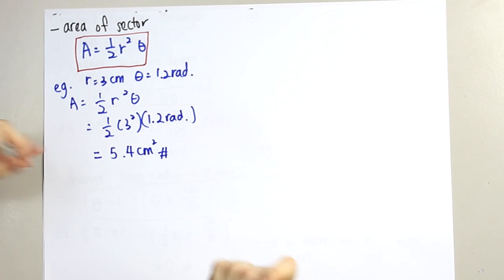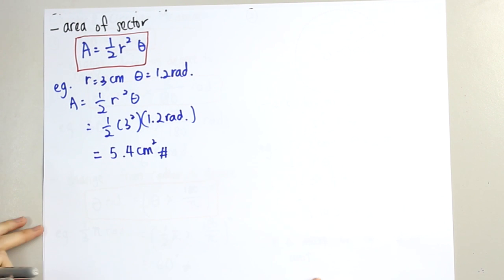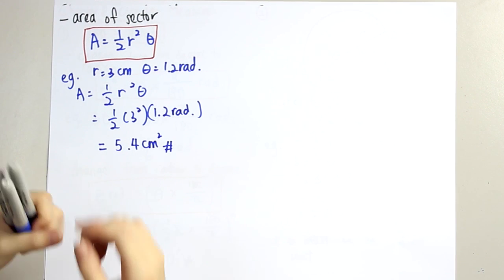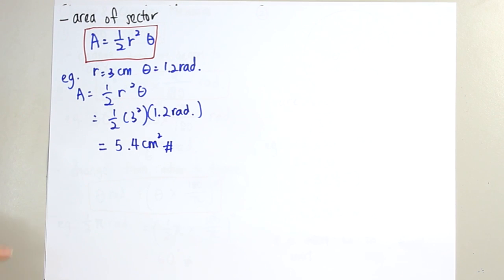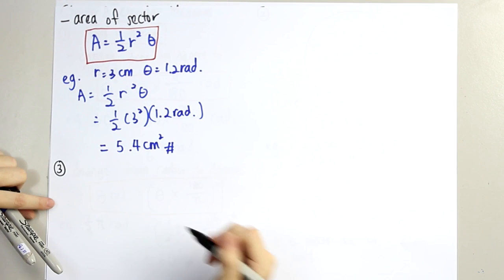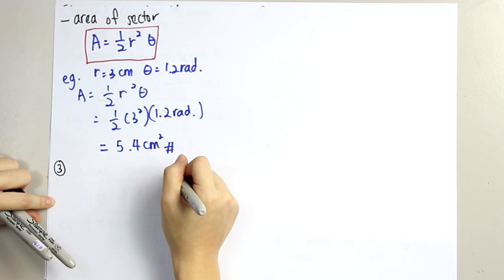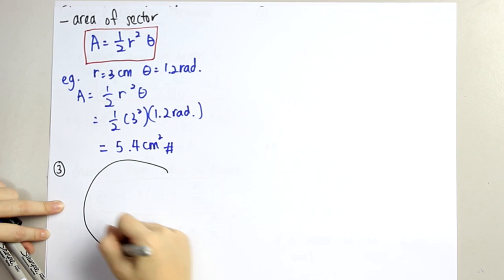For all these questions, all you have to do is apply the formula into the question. Next, we go into the third type of question, which is finding the area of triangle and area of segment.